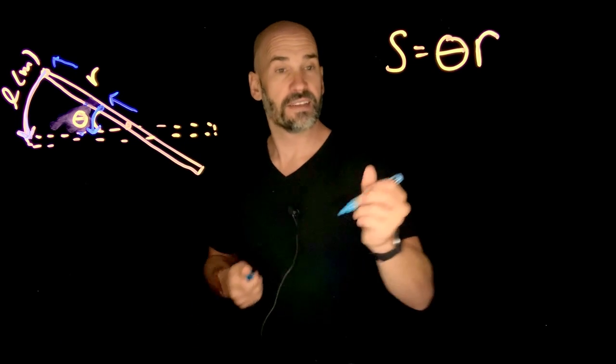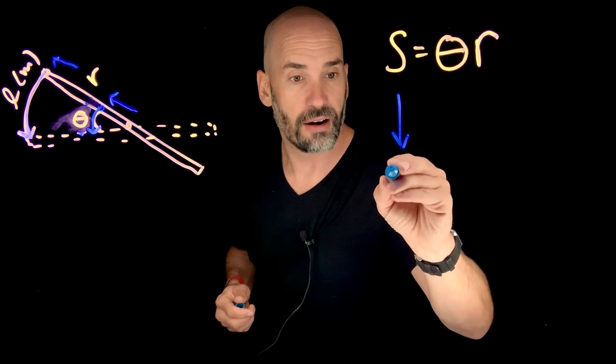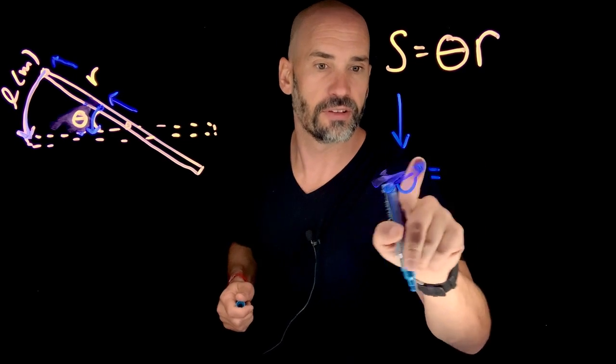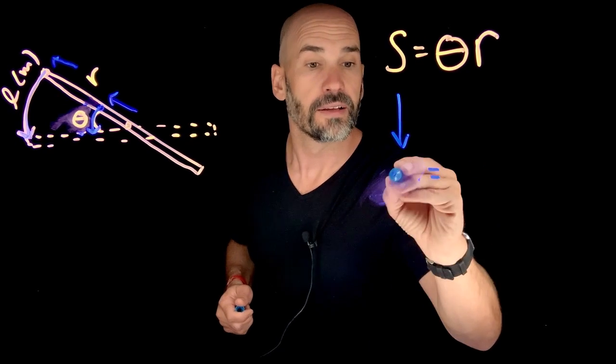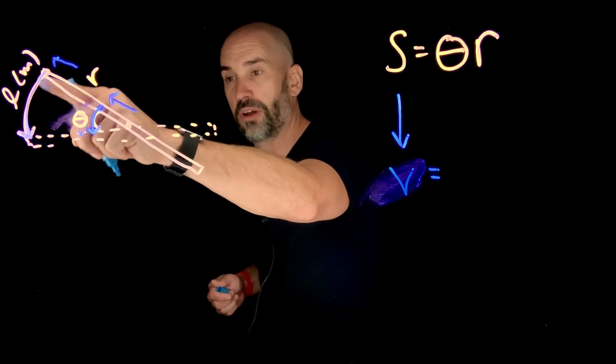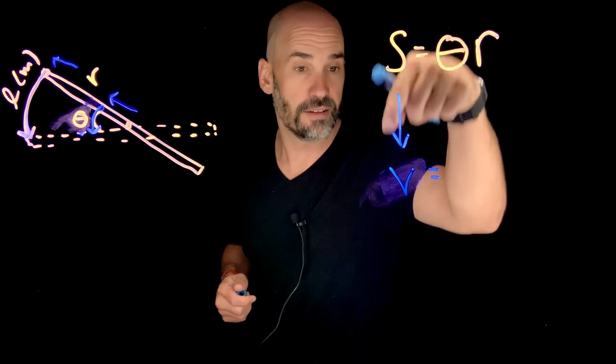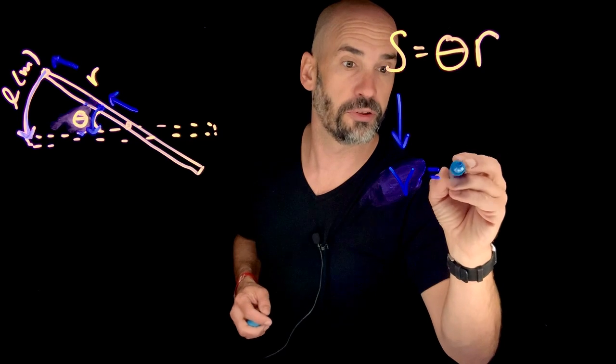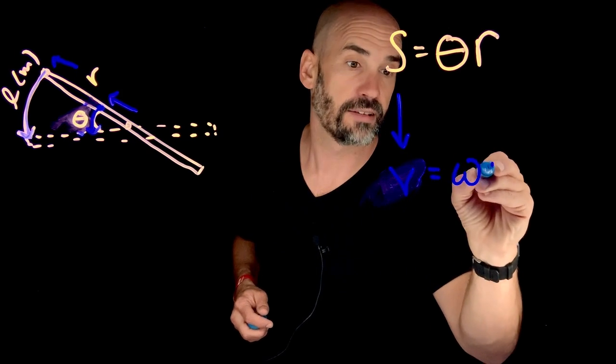And that means that the farther you are out, the faster you're going to be too. So actually, this should be v. So if this is the arc length, or the length that the point is moving through in meters, then the velocity of that point would have to be equal to omega times r.